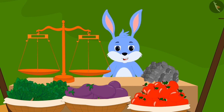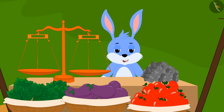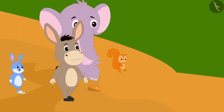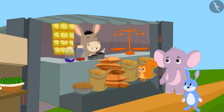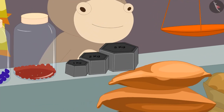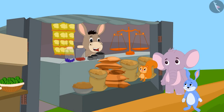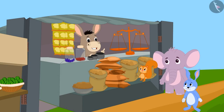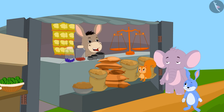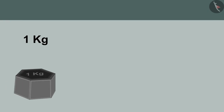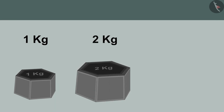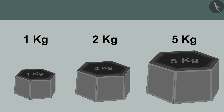Bunny said to Bhoala, 'I understand that kilogram is a unit of weight measurement. But how can we use it to measure the weight of objects?' Bhoala, along with Bunny, Appu and Chanda, reached his shop. There he showed them weights for such use. He said, 'We can measure the weights of objects in kilos using this kind of weight. This weight is 1 kg. This is 2 kg. And this is 5 kg.'